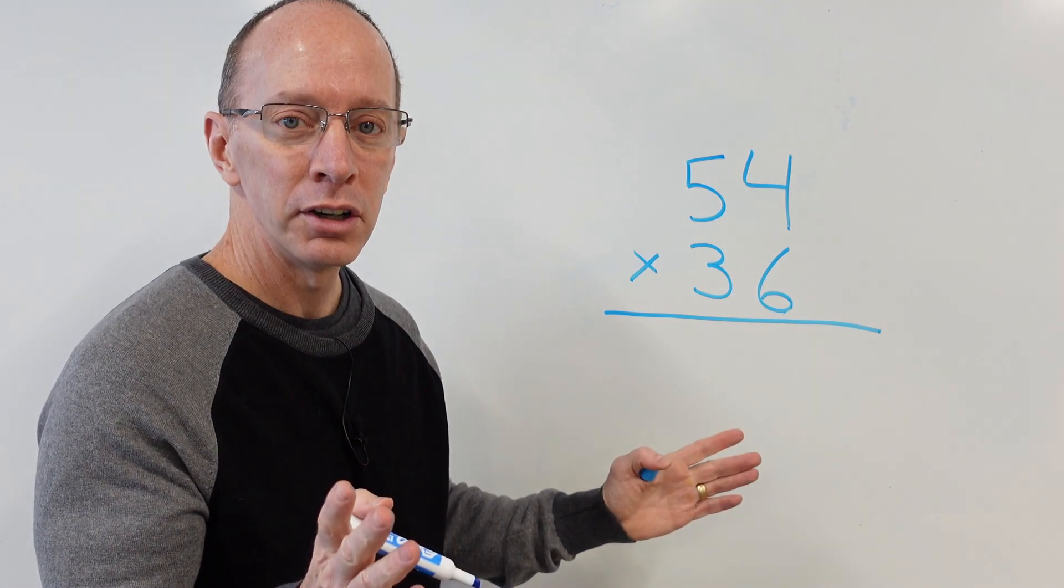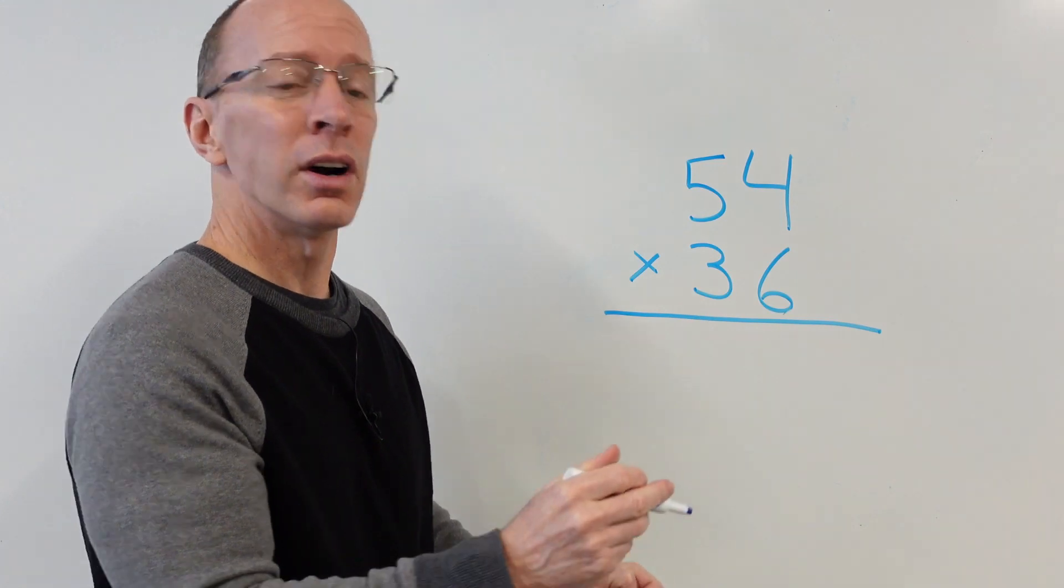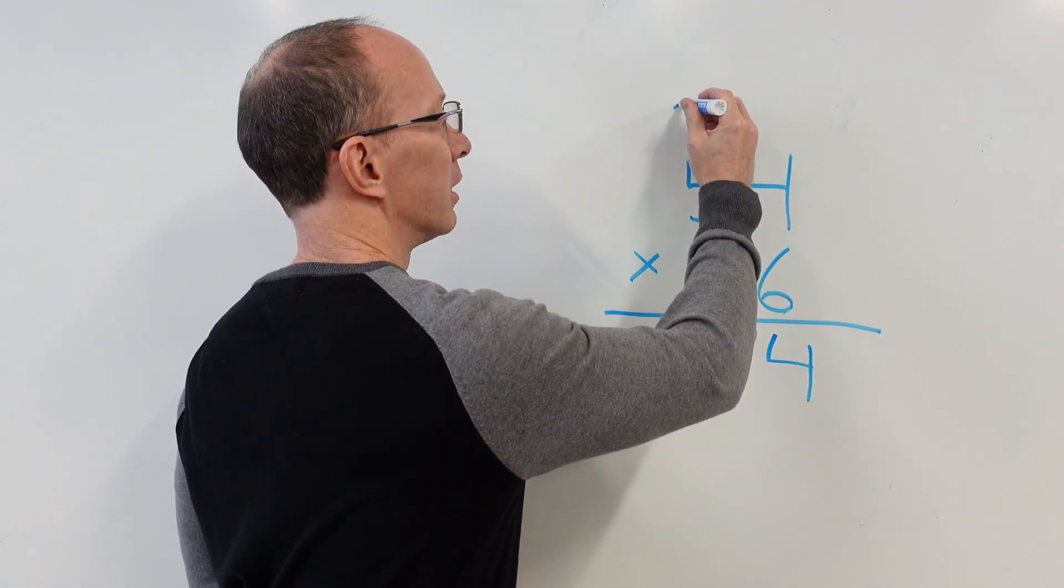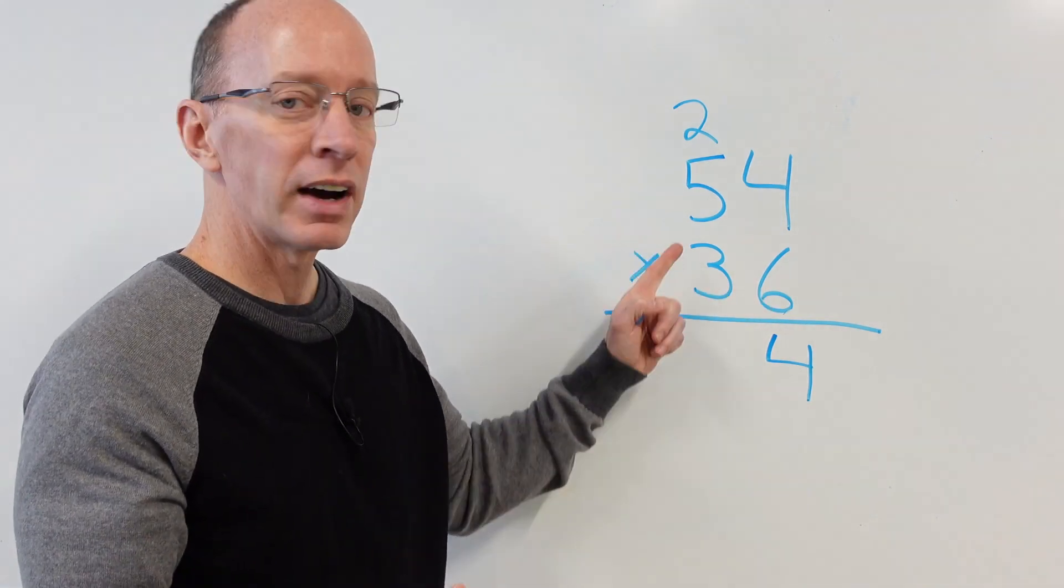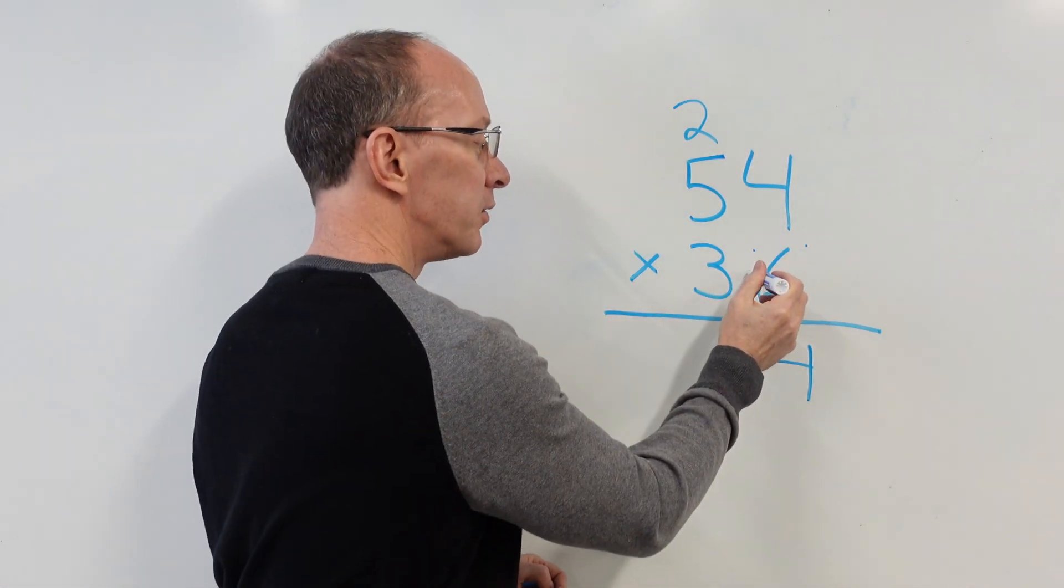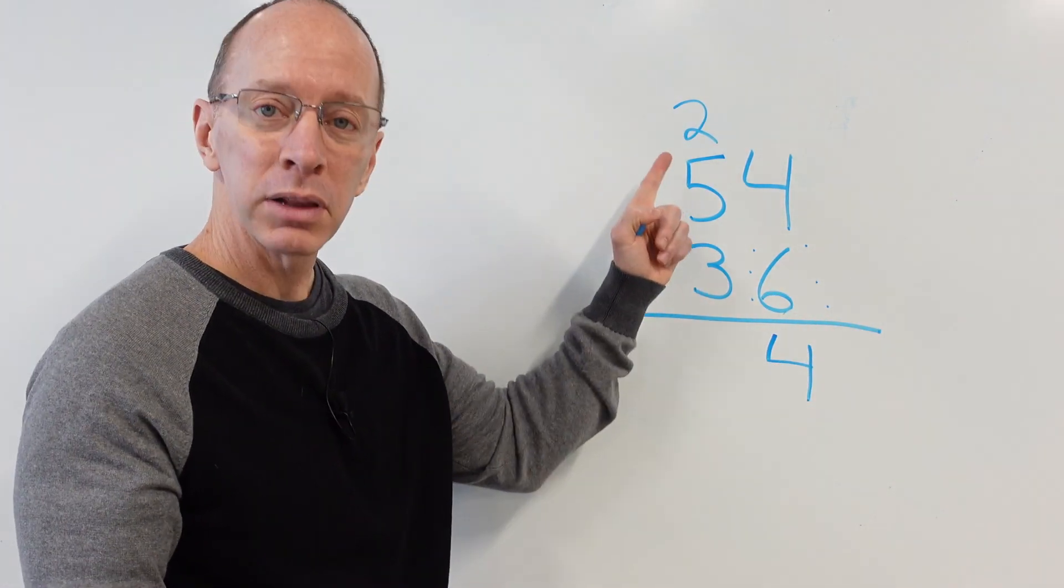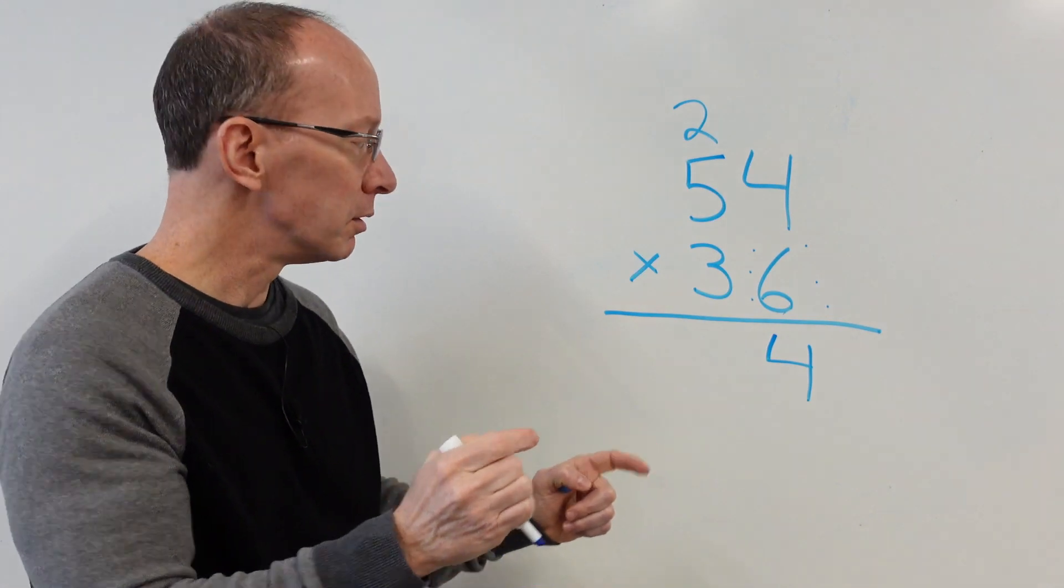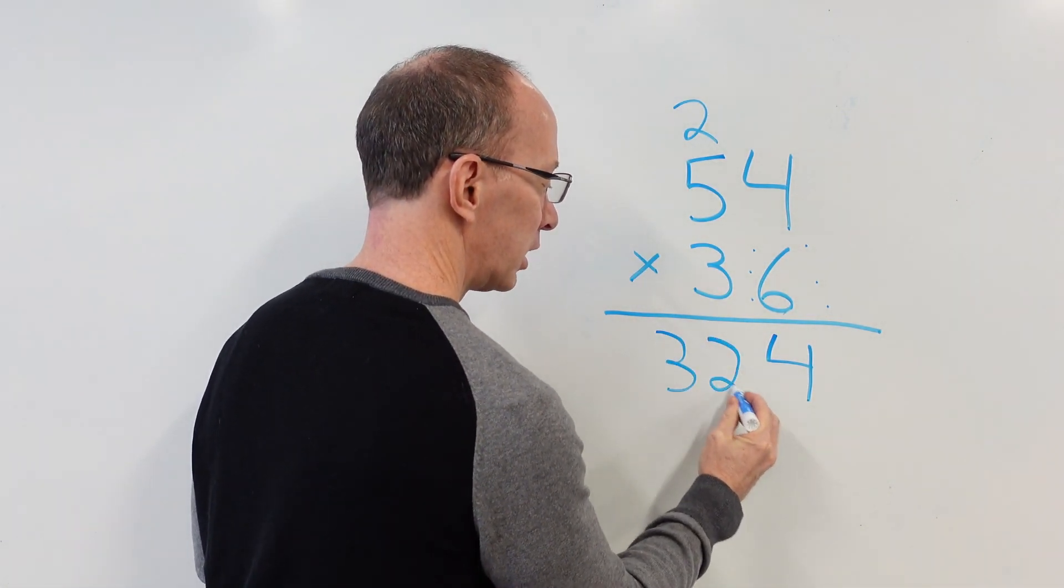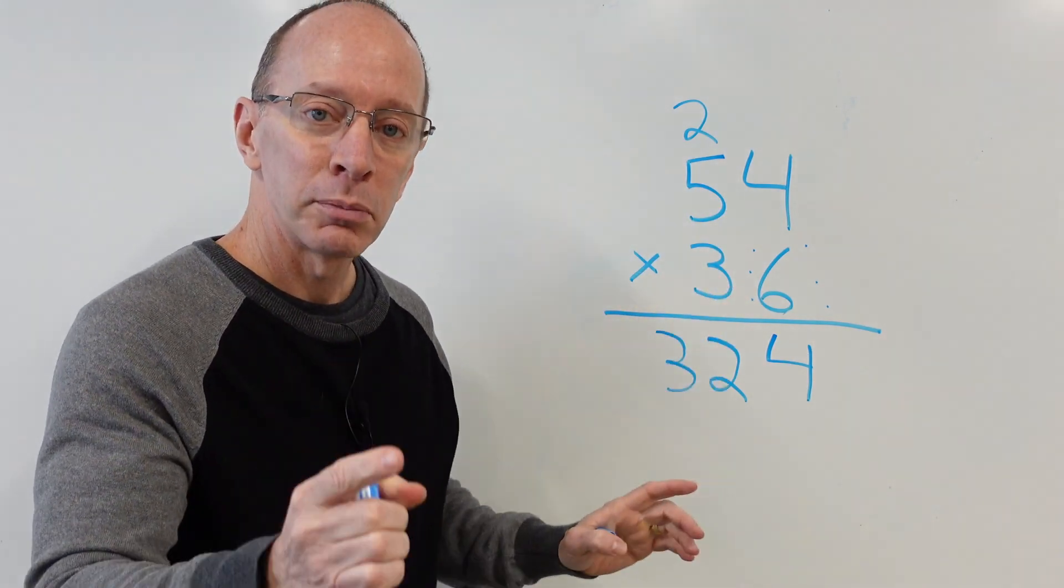First of all, what do you do? Multiply the ones. Six times four is 24. Carry that two. Put it over here. Six times five. Remember your fives. Five, 10, 15, 20, 25, 30. 30 plus the two. 32. All right. 32. Make sure you're writing those numbers correctly.